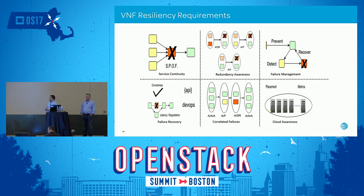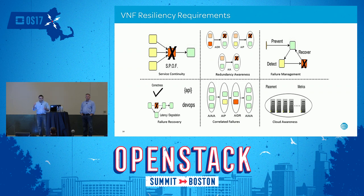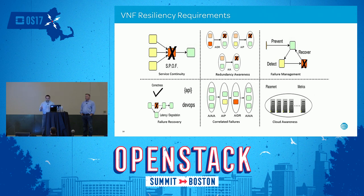From a requirements perspective, we want service continuity and avoiding single points of failure. We want redundancy awareness — how is the VNF deployed? Active DR, active-passive, active-active. Active-active is best, but very hard to do. We want effective failure management and good failure recovery. Big things in failure recovery are correctness of recovery — the make-before-break that Hank described — and the latency of recovery. We also need to address correlated failure: your VNF is often part of a service chain and you're only as good as the weakest link. Last is cloud awareness: your VNF needs to be aware of how it is deployed in the cloud and the health of the cloud.